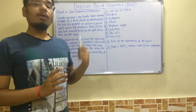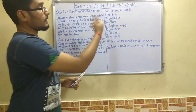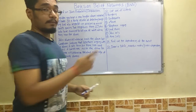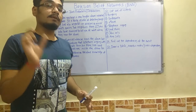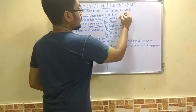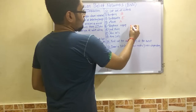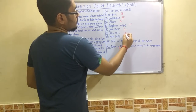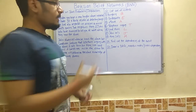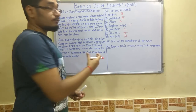Step 1 is to list all the events in the scenario: burglary, earthquake, alarm, telephone ringing, loud music, John calls, and Mary calls. We denote them with letters — B for burglary, E for earthquake, A for alarm, T for telephone ringing, L for loud music, J for John calls, and M for Mary calls. Then we find the dependencies among these events.